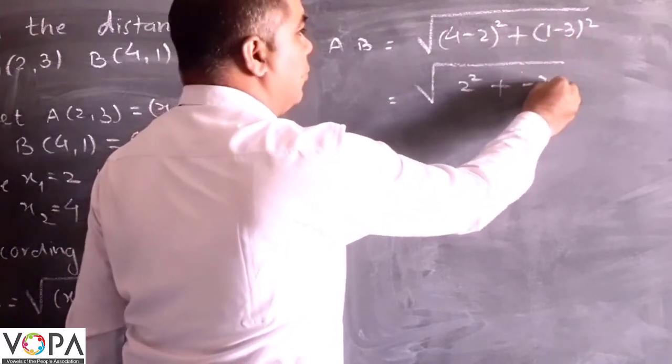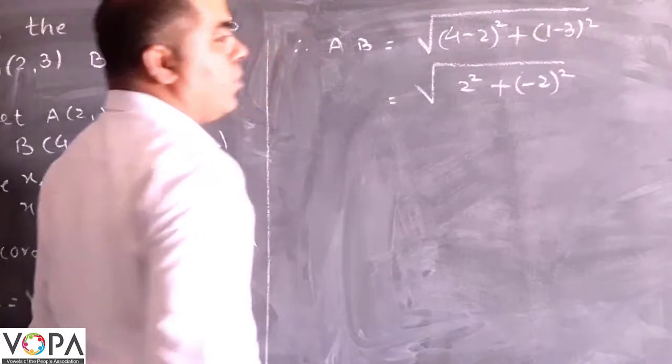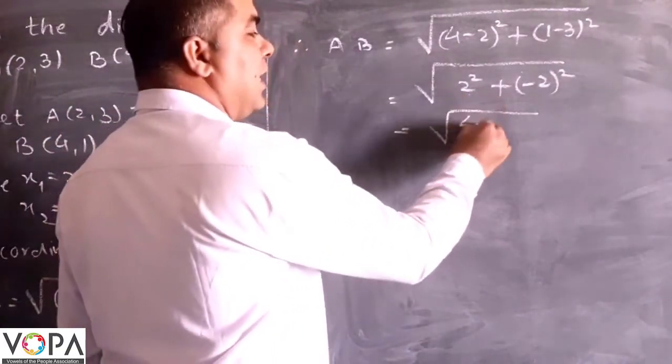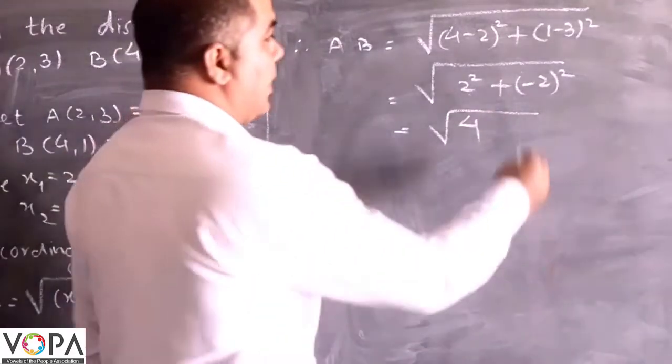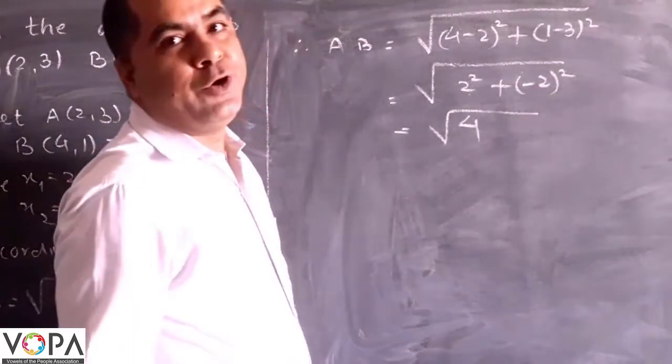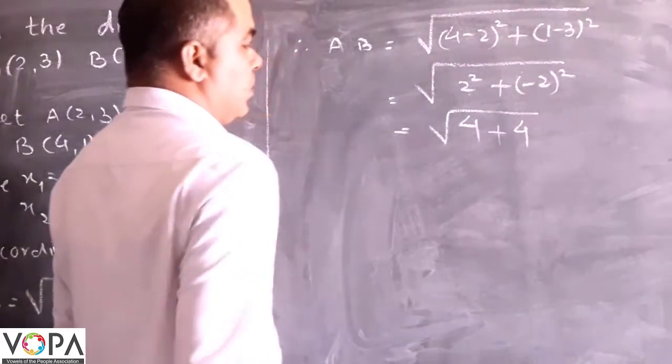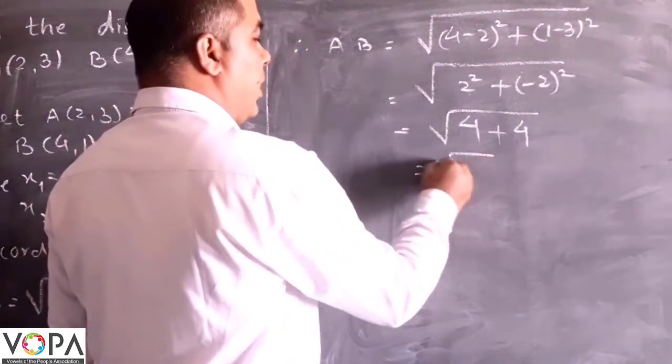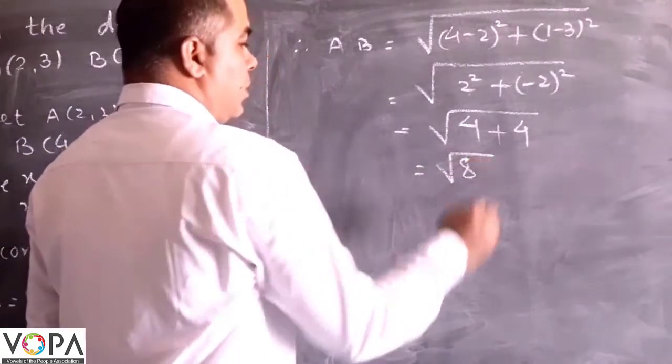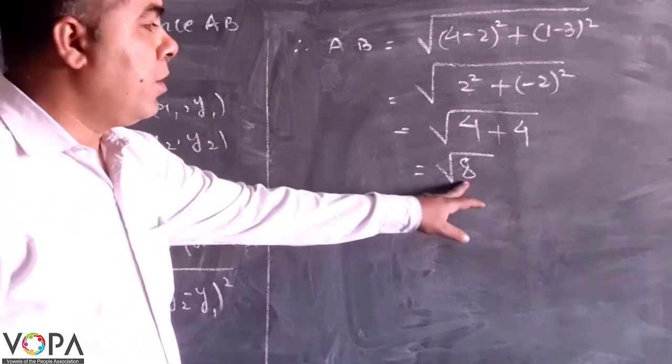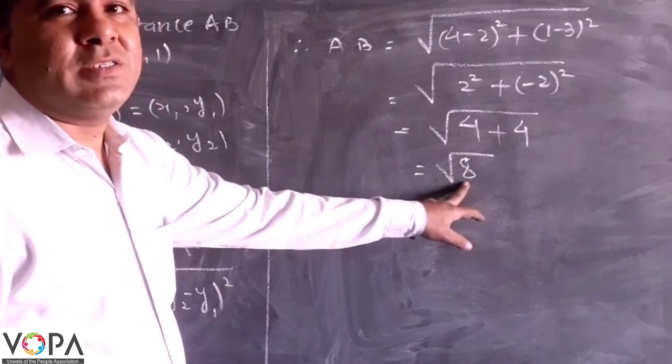Square of 2 squared, that is equals to 4, and square of negative 2, that is also 4. It will be square root of AB. Now again find the factors of AB, that is 4 multiplied by 2.